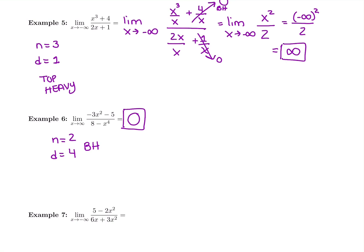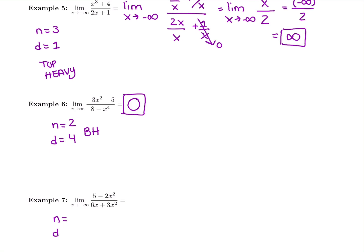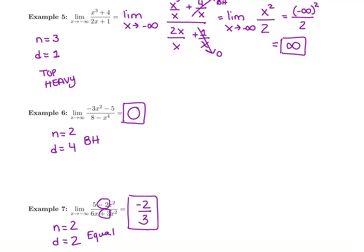And then this last one — what are the degrees? The highest power of x in the top is 2 — we have an x squared. In the bottom it's also 2, there's an x squared. So we have equal degrees. To find the answer, we take the ratio of leading coefficients — the numbers next to x to the highest power. In the top we have negative 2, in the bottom we have 3. Remember to take the signs with you. So the answer is negative 2 over 3. To recap: top-heavy means the answer is infinity or negative infinity — you have to do the work. Bottom-heavy means the answer is always 0. Equal degrees means take the ratio of leading coefficients.